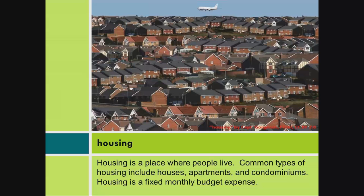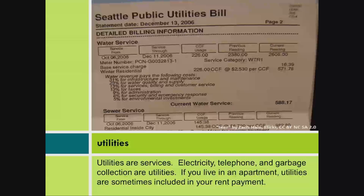Housing. Housing is a place where people live. Common types of housing include houses, apartments, and condominiums. Housing is a fixed monthly budget expense. Utilities are services. Electricity, telephone, and garbage collection are utilities.